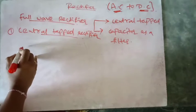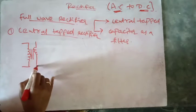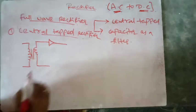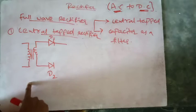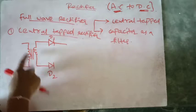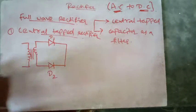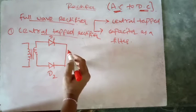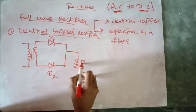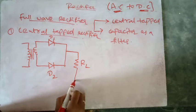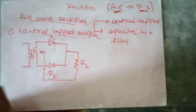The circuit diagram uses a transformer connected to diode D1. In this full wave rectifier, we are connecting two diodes, D1 and D2, to this transformer. I am connecting a load resistor RL, and I am tapping this RL to point CT — the central tap point.